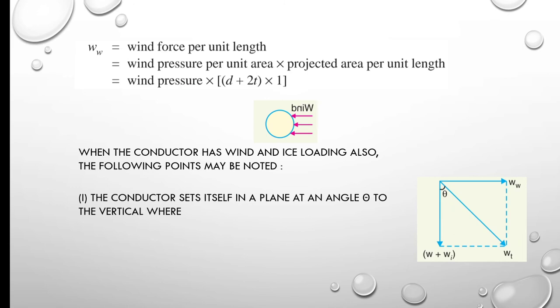This is the total force per unit length of the conductor. The angle θ can be calculated as tan θ = Ww/(W + Wi).